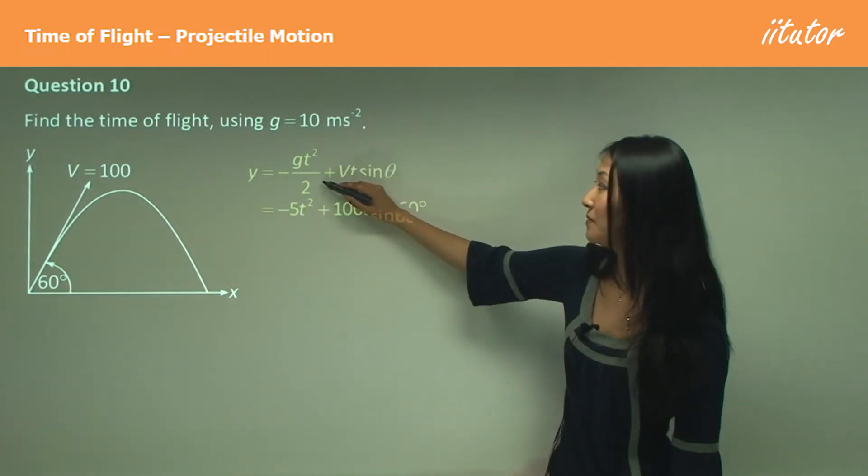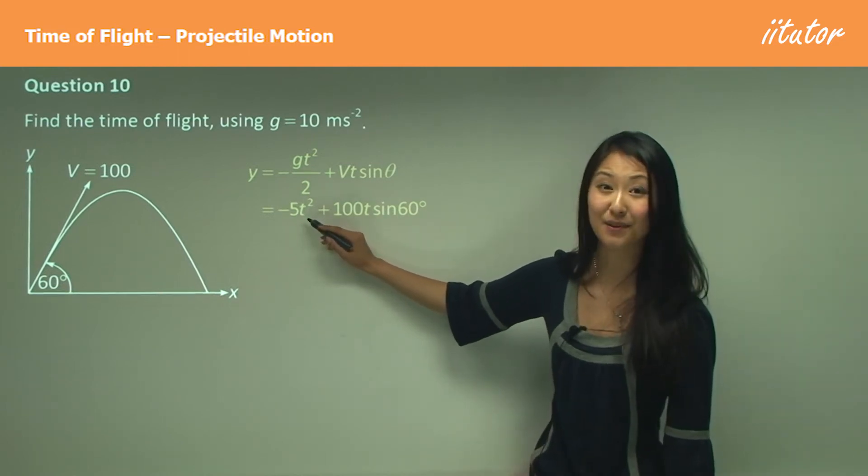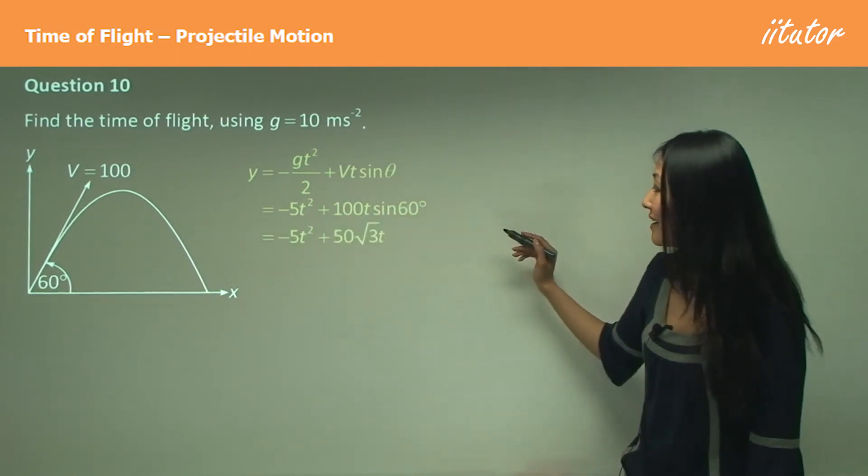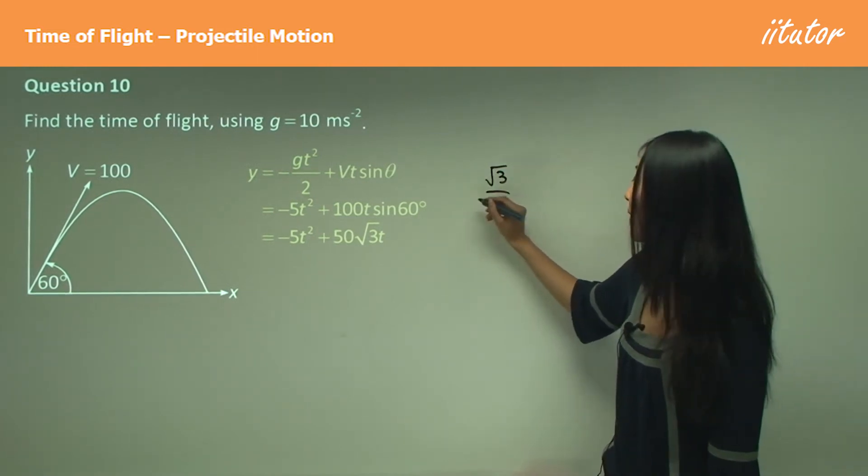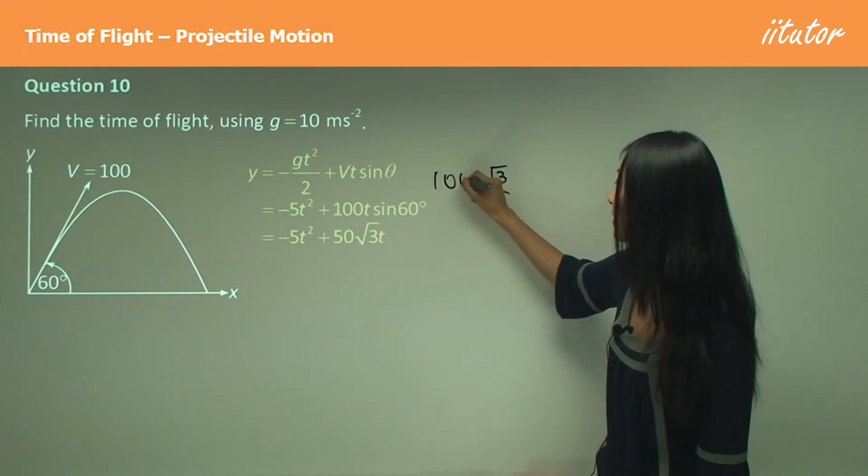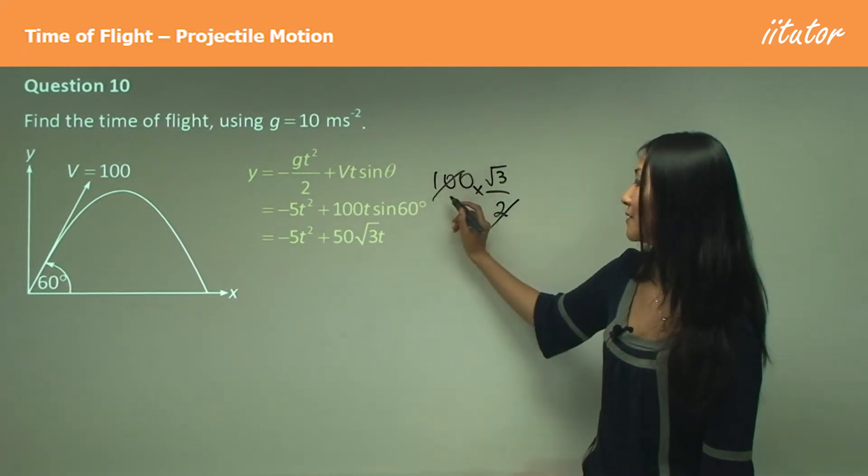The 10 and the 2 cancel, that's why we have -5t² there. And sin(60°), we know that's √3/2. So when it's multiplied by 100, that cancels to give us 50√3t here.